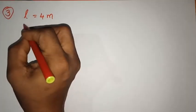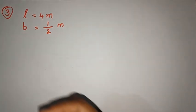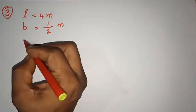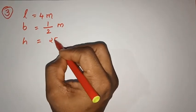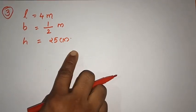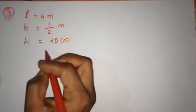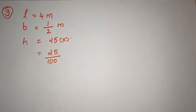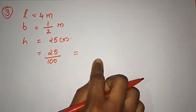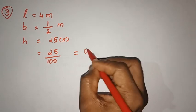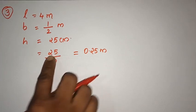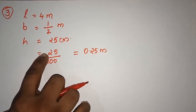Length is equal to 4 meters, breadth is equal to 1/2 meter. Height is equal to 25 centimeters. We will convert it: 25 divided by 100 is equal to 0.25 meters.